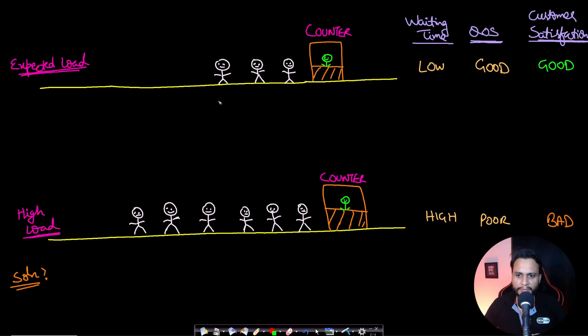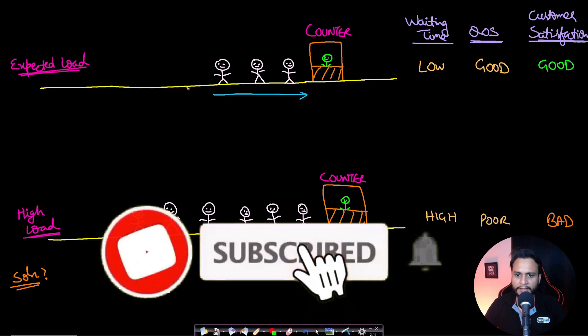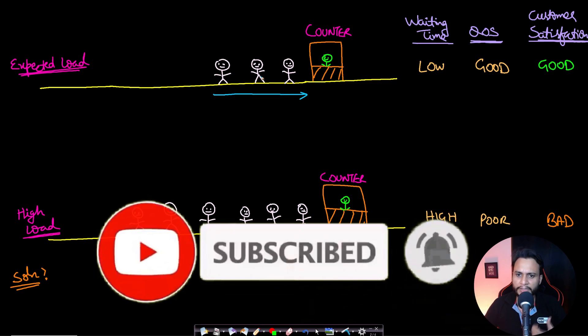Let us take a real life example of a ticket counter. In a ticket counter there is a queue of people standing in line, and let's say this is the expected load where three people are standing in a queue.